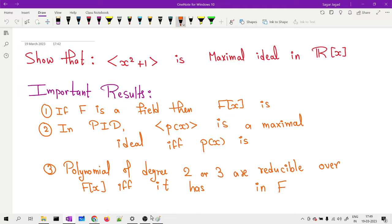The results are as follows: if F is a field, then F[x] is nothing but PID—principal ideal domain. If F is a field, then F[x] becomes PID.